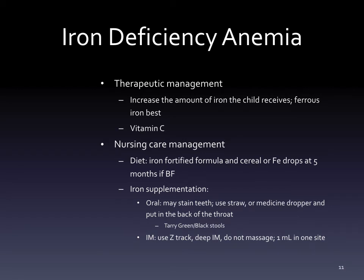For therapeutic management of iron deficiency anemia, we increase iron intake - dietary iron through ferrous iron is best. Along with iron supplementation, ensure they're getting plenty of vitamin C, which increases iron absorption. For nursing care, make sure babies have iron-fortified formula or cereal, or start iron drops at five months of age if breastfed, ensuring they're getting the iron they need.